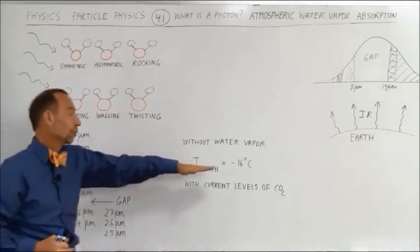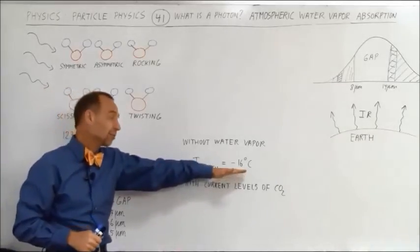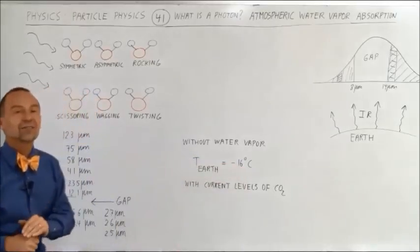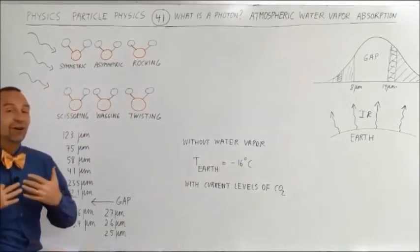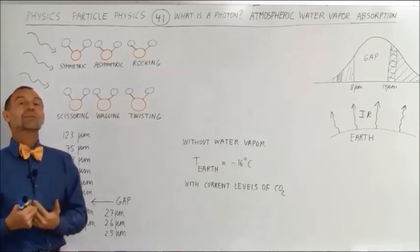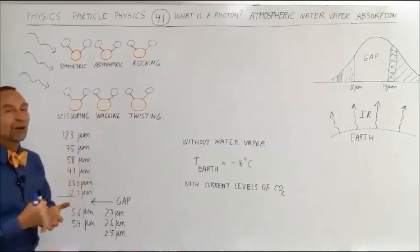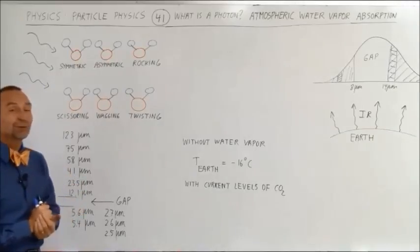life on Earth would be virtually impossible because with an average temperature of minus 16 degrees centigrade, life would virtually not exist on the Earth. So we have our pleasant Earth climate to thank to the very interesting capability of the water molecule. And that's how it goes.